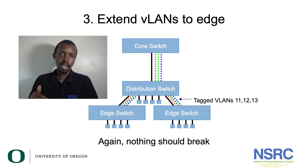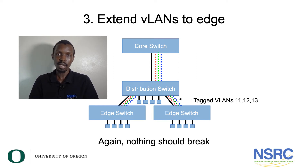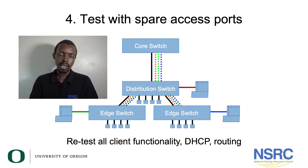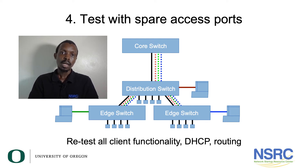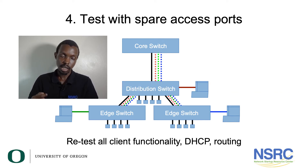Then extend the VLANs to the edge switches. You already have the old VLAN; now extend the new tagged VLANs — and if you decided to tag the old VLAN, tag it as well on the trunk port between the edge switch and the distribution switch. Nothing should break at this point because everyone on the old VLAN still has access to everything. Then test at each point that has an access node: set the access port to VLAN 11, 12, then 13, and test DHCP, routing, server access, and printing at both the distribution switch and each edge switch.